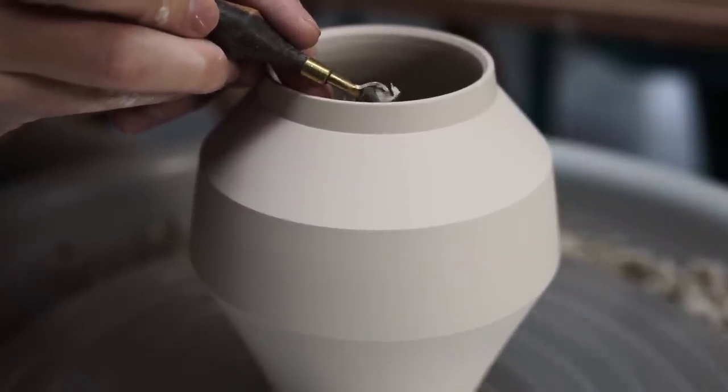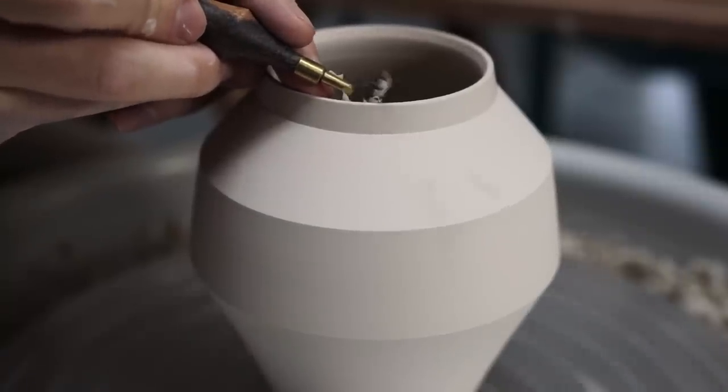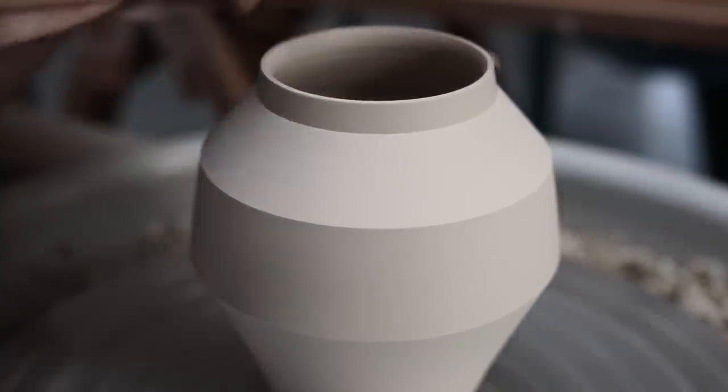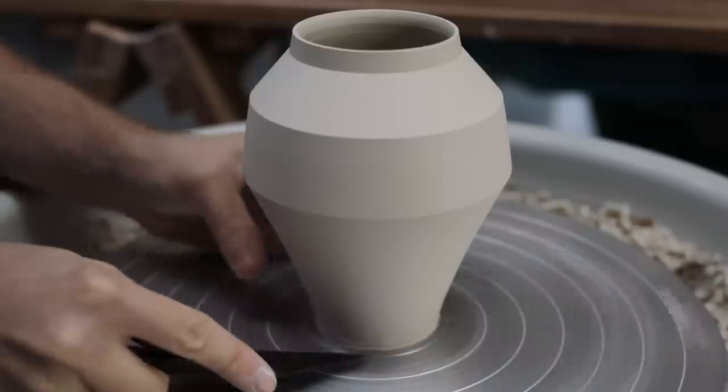To further fix the rim, I take this tiny loop turning tool and I roll it up and out the rim, beveling this edge and making it appear more even by thinning out what was a slightly thicker patch on one side of the rim.